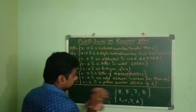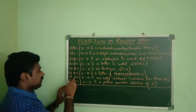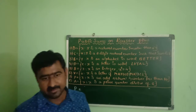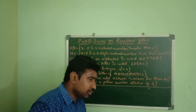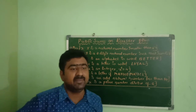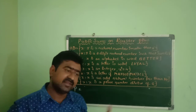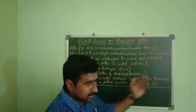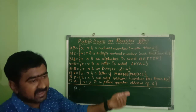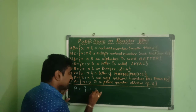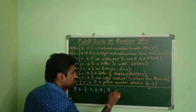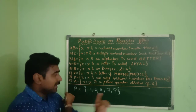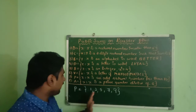Seventh sum: Set P = {x such that x is an odd natural number less than 10}. Natural numbers less than 10 are 1 through 9. Odd numbers are those that when divided by 2 give a remainder of 1. So the odd natural numbers less than 10 are 1, 3, 5, 7, 9. Therefore Set P = {1, 3, 5, 7, 9}.